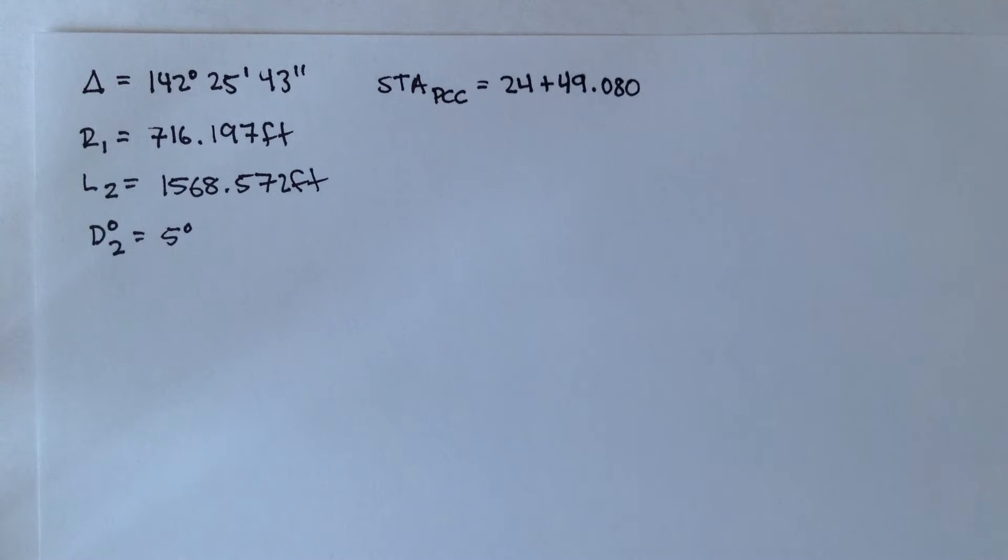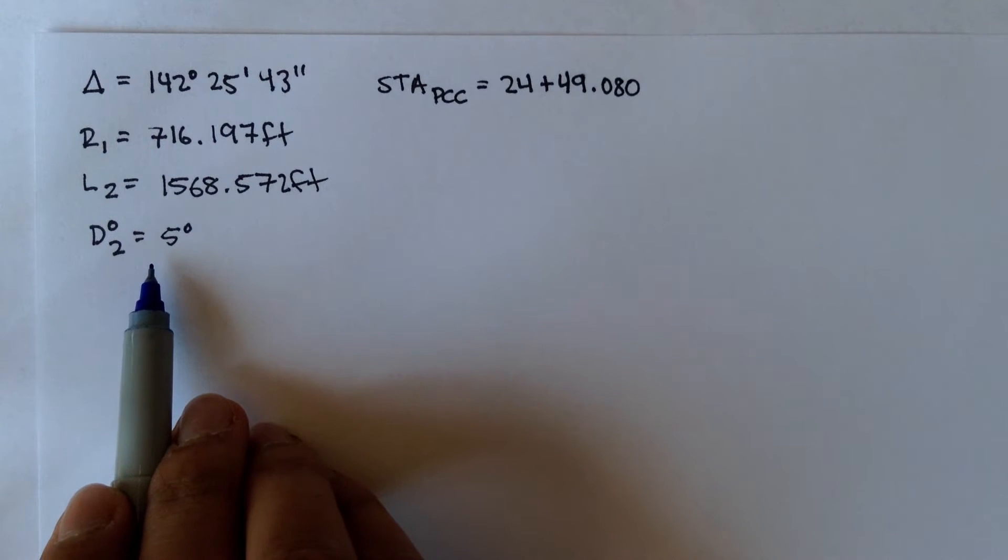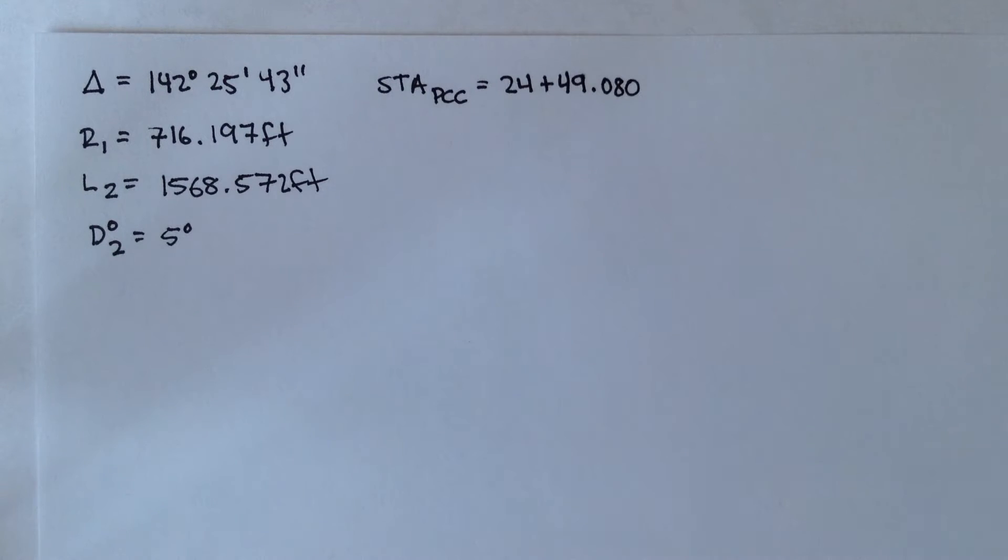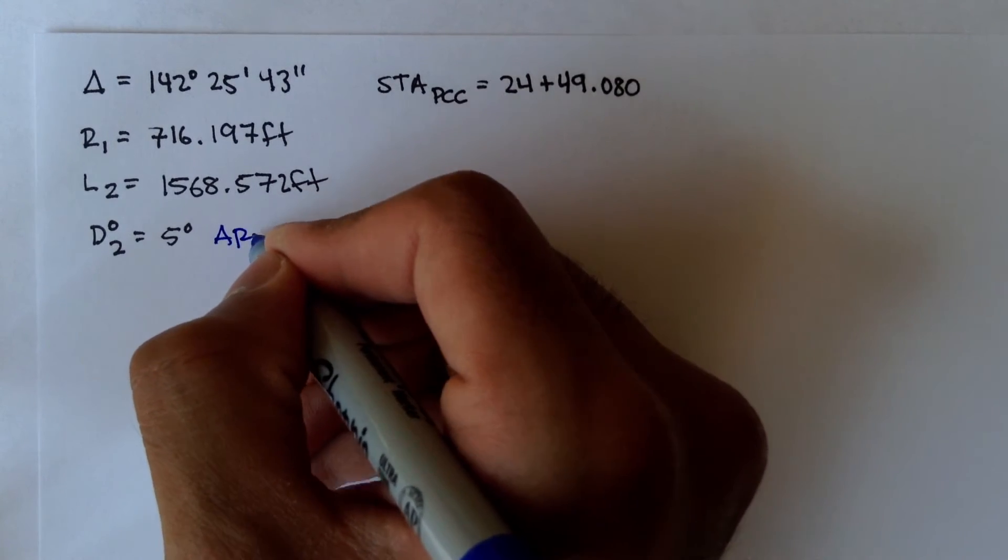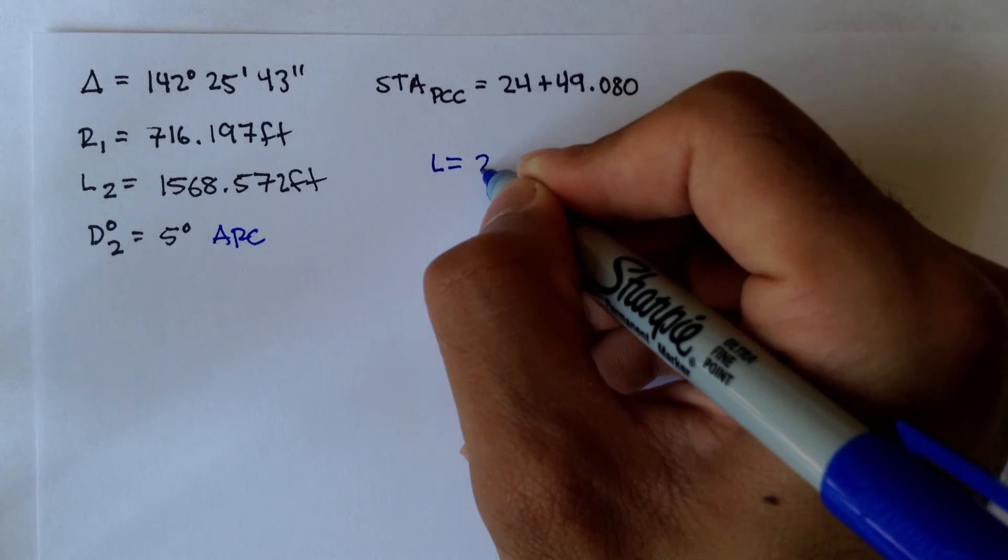The first thing we want to figure out is what is delta 2. So what is the interior angle for curve 2? And we can figure that out using the degree of curvature that's given. And remember, this degree of curvature, it doesn't say if it's by arc or by chord, so we always assume by default that it's arc.